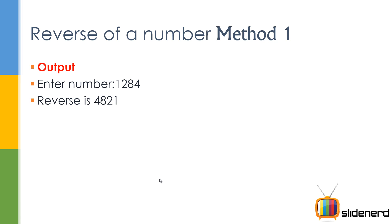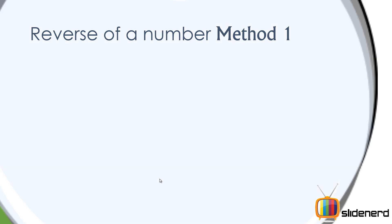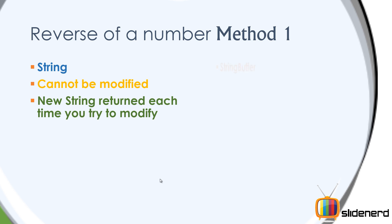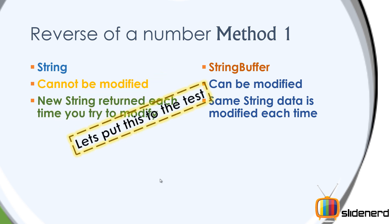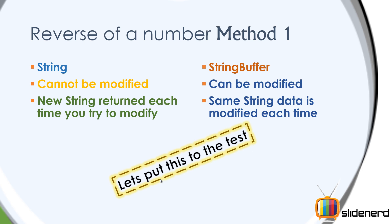Here is something you need to know. There is something called String which cannot be modified — every time you try to modify it, it gives you a new String; that's how String works. On the other hand, there is something called StringBuffer which can be modified. That means if you have data inside your StringBuffer and you try to add, delete, or reverse something, the string inside gets modified. There are two classes in Java that handle string stuff: String and StringBuffer. There's a third one called StringBuilder which we won't look at right now.